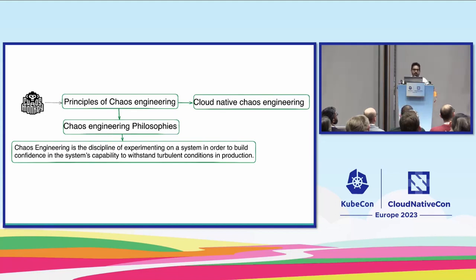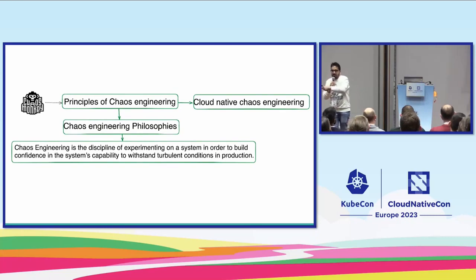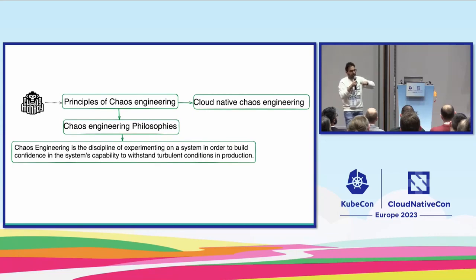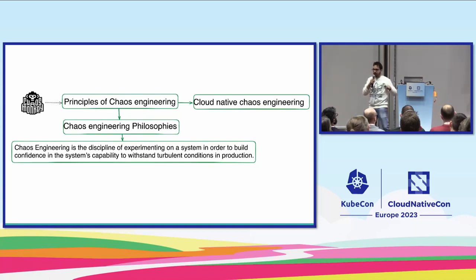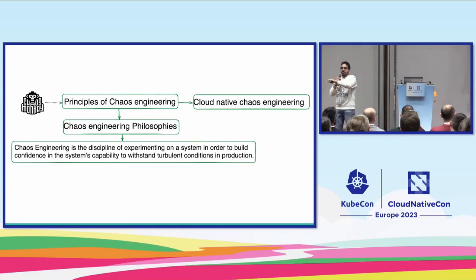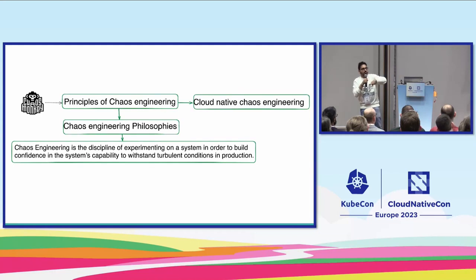By definition, chaos engineering is the discipline of experimenting on a system in order to build confidence in the system's capability to withstand turbulent conditions in production. Simply put, we are injecting failures into the system to understand how it will behave if any issue comes, and to catch that issue before it actually happens in production. It's similar to injecting a vaccine into a person to make them immune to a particular disease.